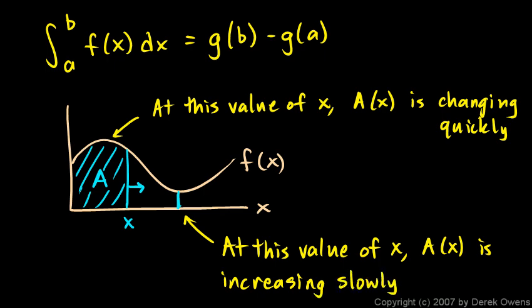Now let's see if we can draw this. The value of A as a function of x is going to be increasing the whole time because this function, my function f here, is always above the axis. So as we go to the right, we're enclosing more and more area. We're just doing so at different rates.